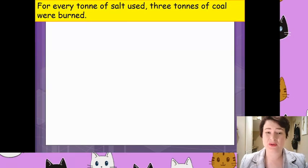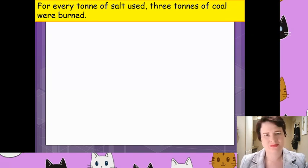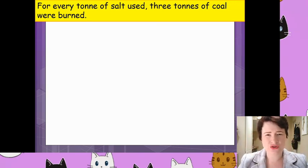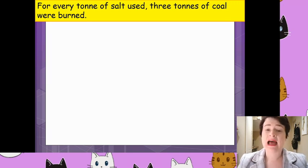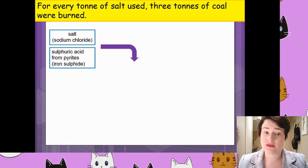Looking at the inputs, salt was actually the raw material used the least — only one ton of salt for every three tons of coal, which is the raw material we like the least today. We're going to sketch out this process now. This is not a requirement on your course — it's just to show where we started from and where we're going. What may appear on exams is your interpretation and evaluation of an industrial process in terms of green chemistry. So the inputs: sodium chloride extracted from the sea, and sulfuric acid from pyrites.